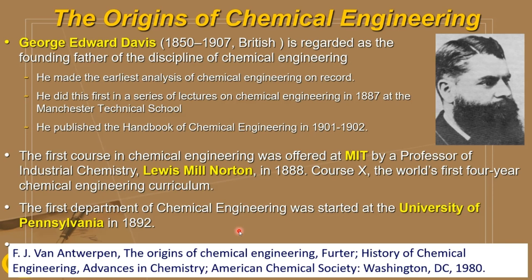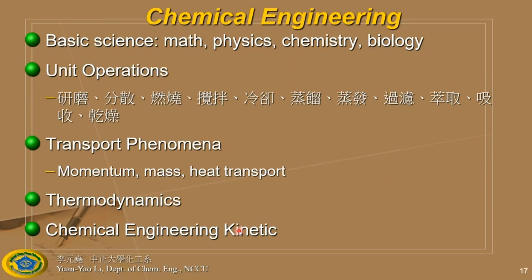Chemical engineering requires knowledge from science — mathematics, physics, chemistry, and biology. For chemical engineering specifically, you need to know three things: unit operations, transfer phenomena, and chemical engineering kinetics. Unit operations include processes like stirring, cooling, distillation, evaporation, filtration, and extraction. You might say, 'I already know how to stir with a spatula' — but that's chemistry, not chemical engineering.